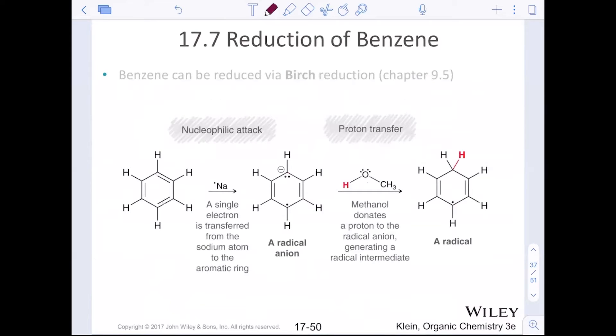Alright. So benzene gets donated a single electron from a sodium atom. So we're going to see our single electron arrows. Now, what that does is it causes pi bonds to split and to cascade. So that first pi bond will join together to make an anion. And all the subsequent pi bonds will break up around that ring to form a radical at the bottom. So we have a radical anion, just like our previous dissolving metal reduction of sodium and ammonia of an alkyne from chapter nine.